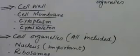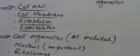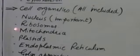All organelles are important. First, the details of structures which are not organelles — cell wall, cell membrane, cytoplasm, and cytoskeleton. Then come the details of cell organelles: nucleus, ribosome, mitochondria, and plastids — these are important long questions.